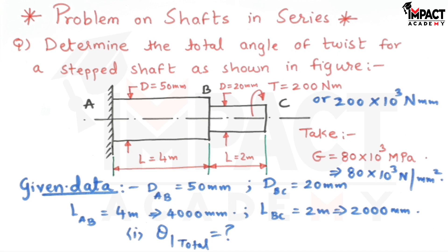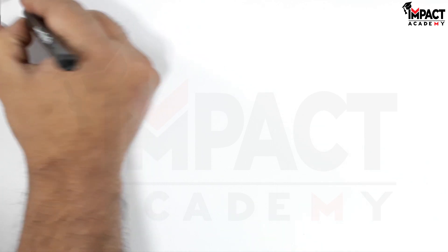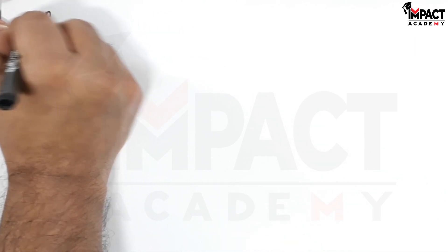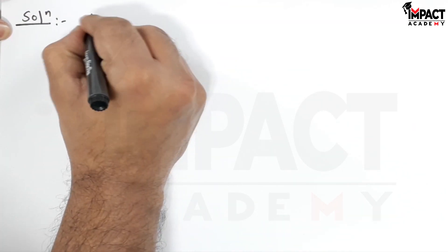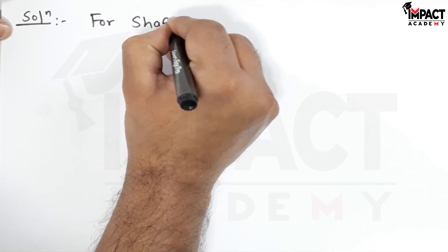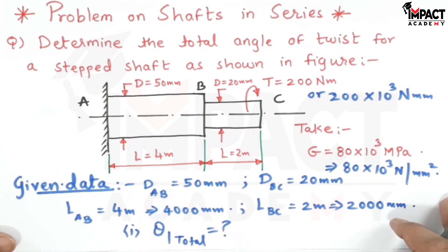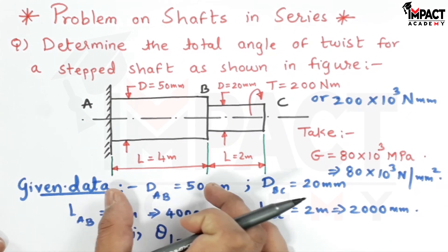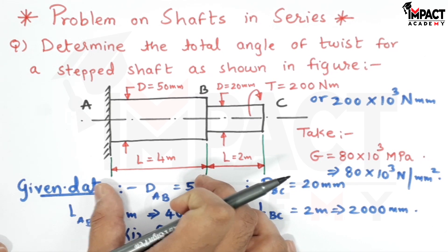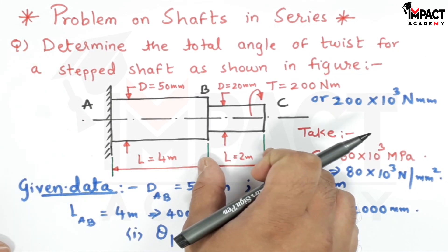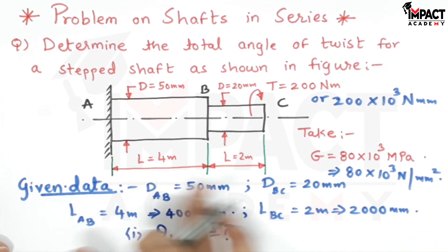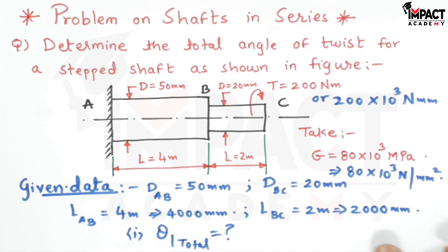Let's get started with the solution. For shafts in series: it's called series because the length of shaft AB is connected to another shaft with different diameter and length. When we add the lengths, it's shafts in series.